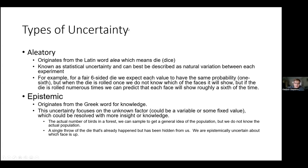An example of aleatoric uncertainty: if you throw a pair of six-sided dice, you don't know which face will show, but on average each face will show roughly a sixth of the time. Epistemic uncertainty originates from the Greek word for knowledge and focuses on unknown factors — a variable or fixed value we could learn more about with more insight. Examples include the actual number of birds in a forest, or a dice already thrown but hidden from view.